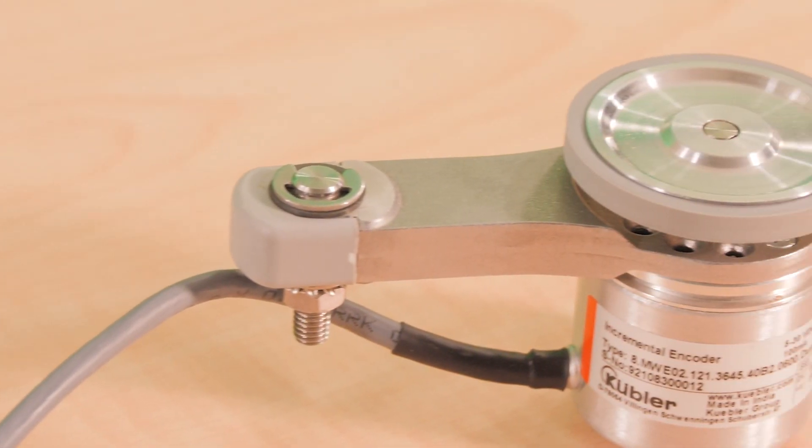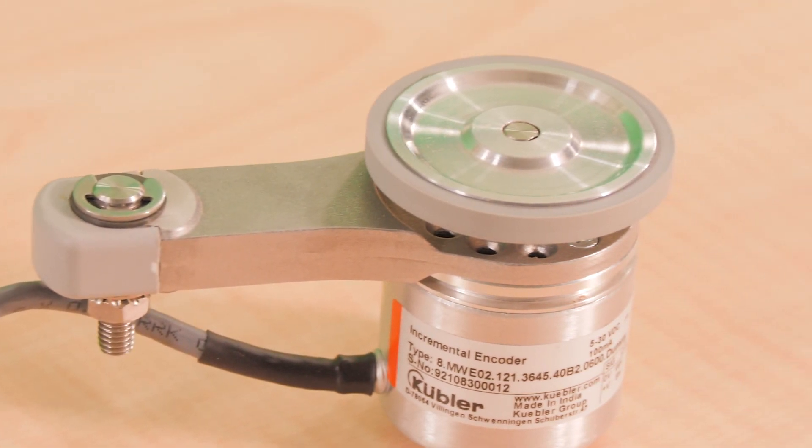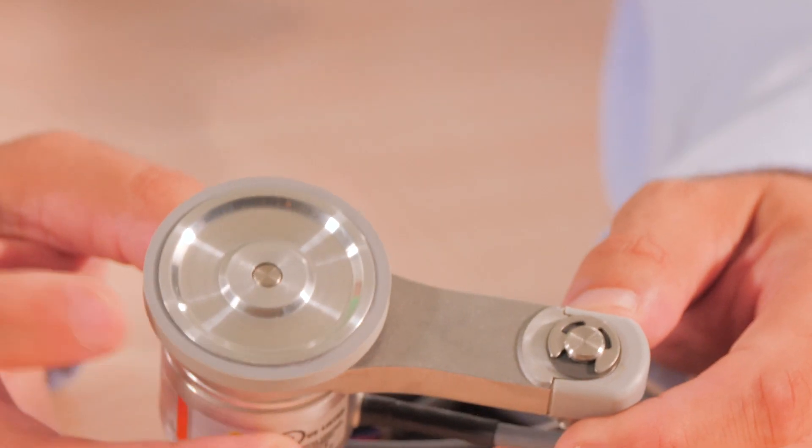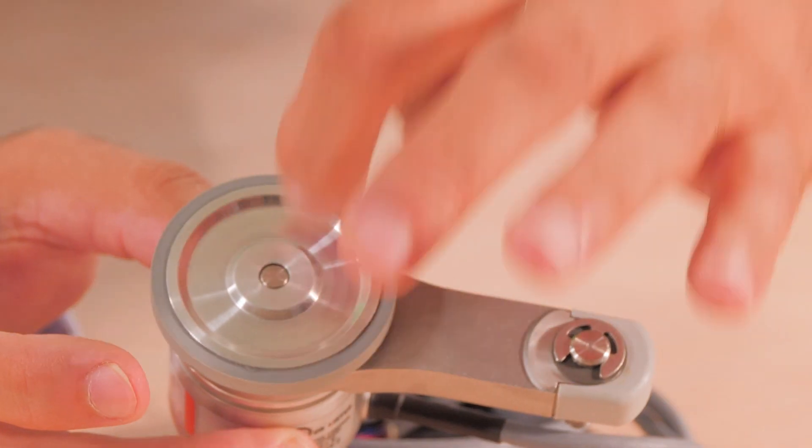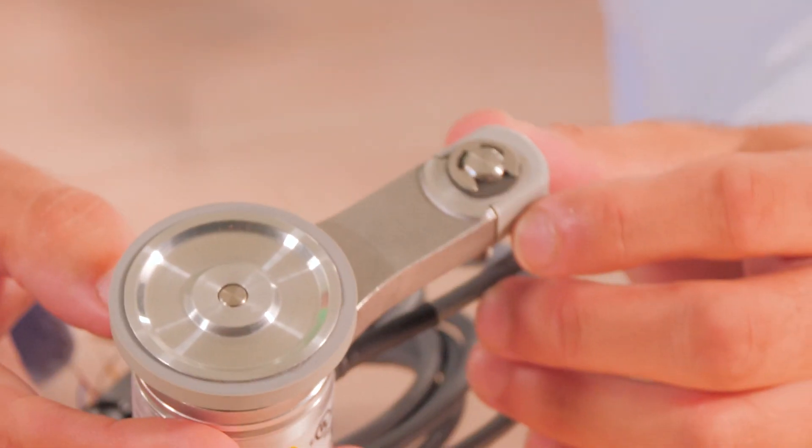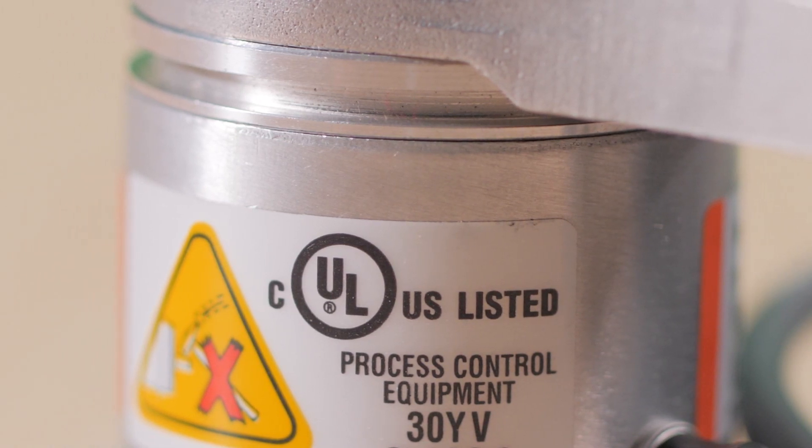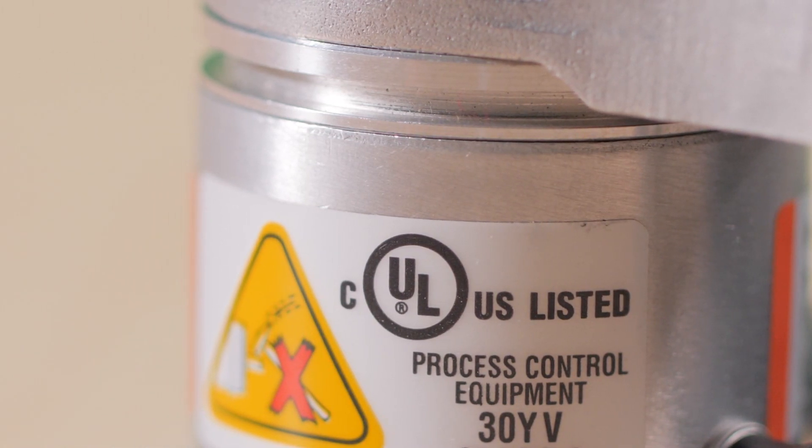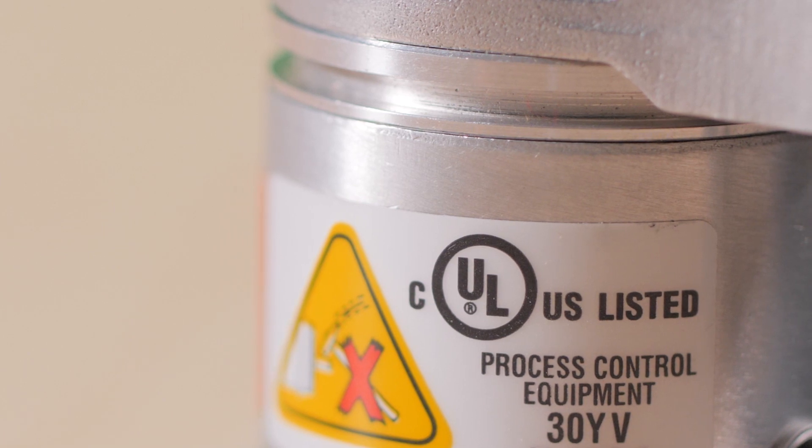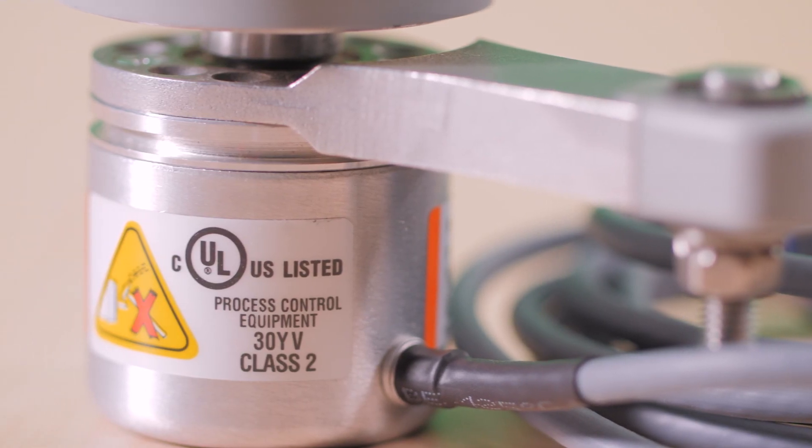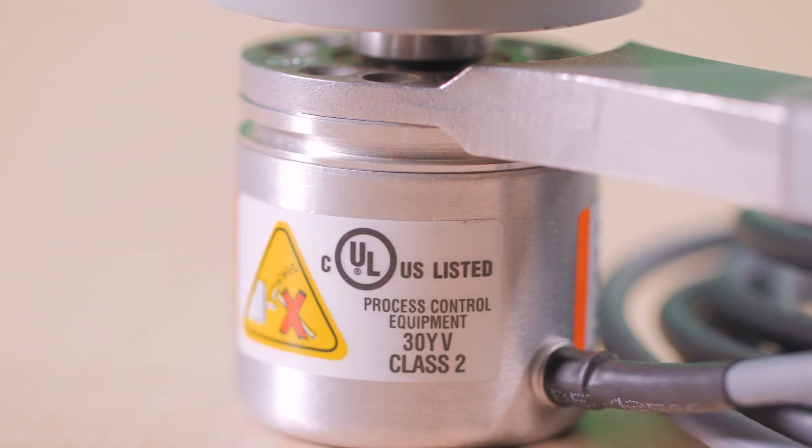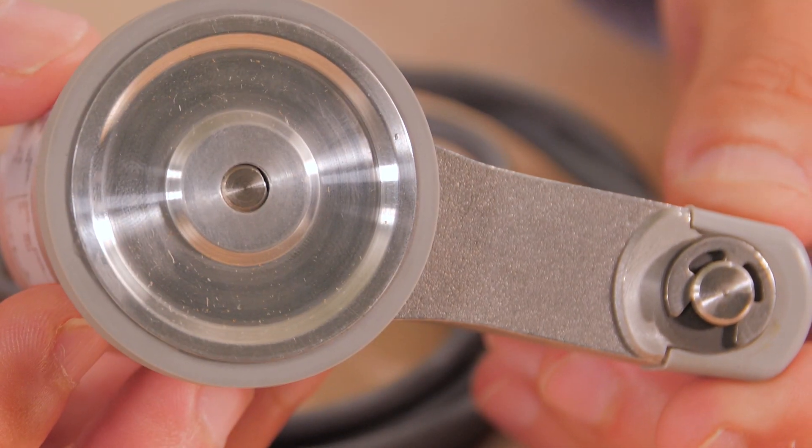This results in direct and precise acquisition of the measurement data. The reliable recording of speed, for example, is ensured by the contact pressure of the measuring wheel by means of an integrated spring. This also compensates for the unevenness of the measuring surface, which could lead to faulty measurement. In addition, the integrated spring keeps the measuring wheel system robust and helps ensure a long service life.